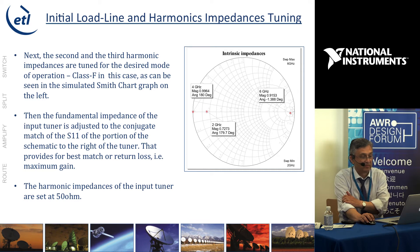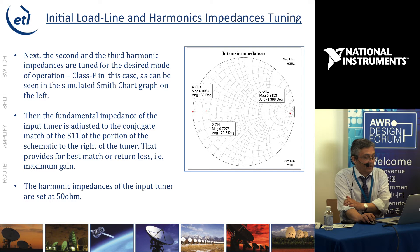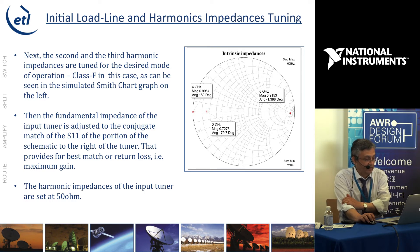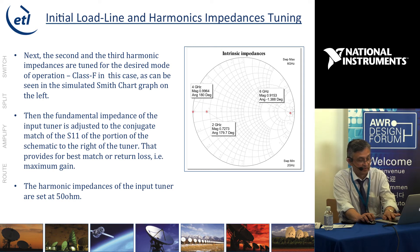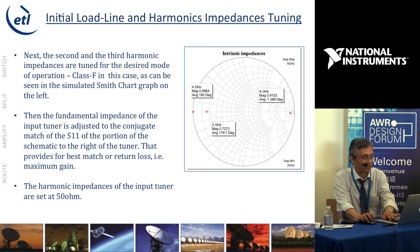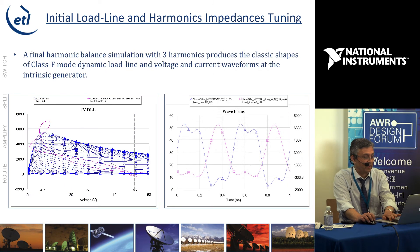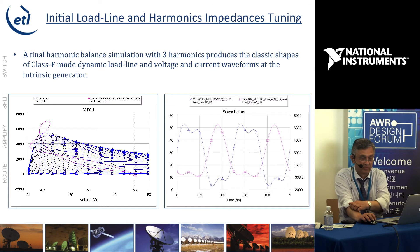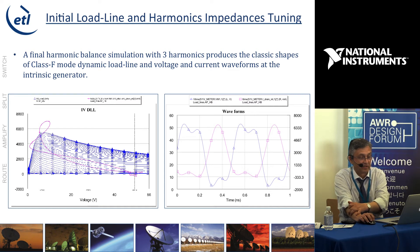We tune the fundamental to be near-optimum, then tune the second and third harmonic for class F operation: second harmonic is short, third harmonic is open. At the fundamental, the intrinsic impedance is obviously pure resistance. The input is matched to S11 to provide gain, and the harmonic impedances of the input tuner are at 50 ohms, so we ignore the influence of harmonic impedances on the input. Running the simulation with free harmonics, we see a very typical class F dynamic load line and current and voltage waveforms.